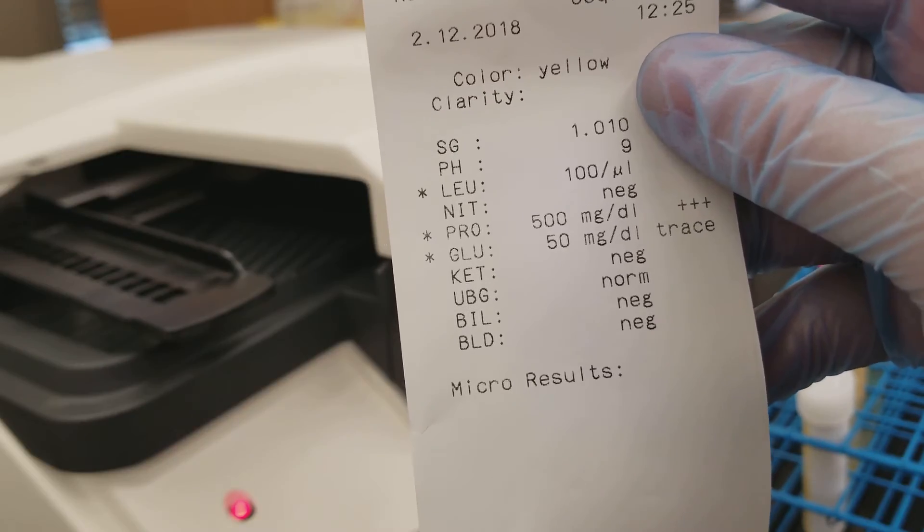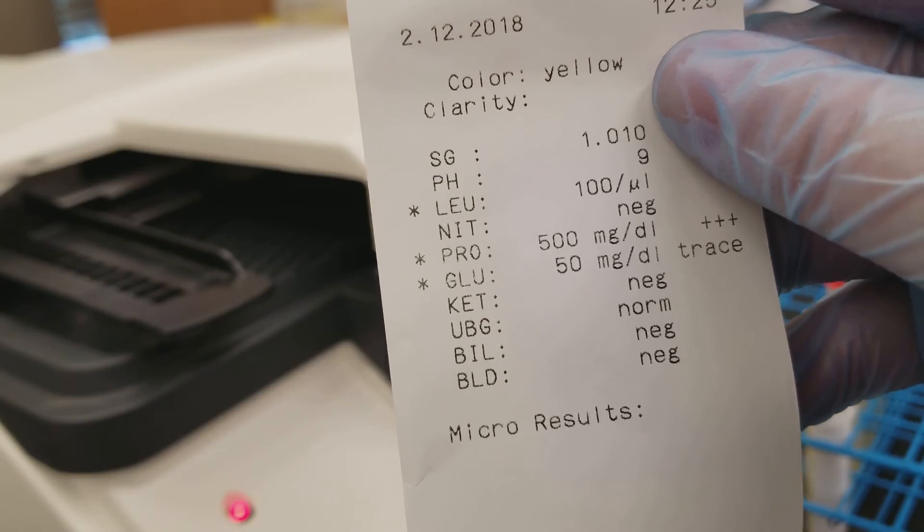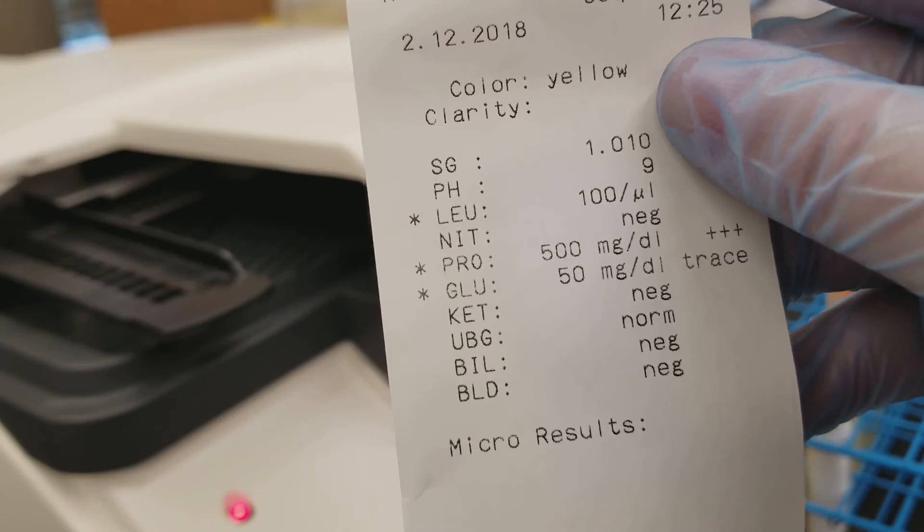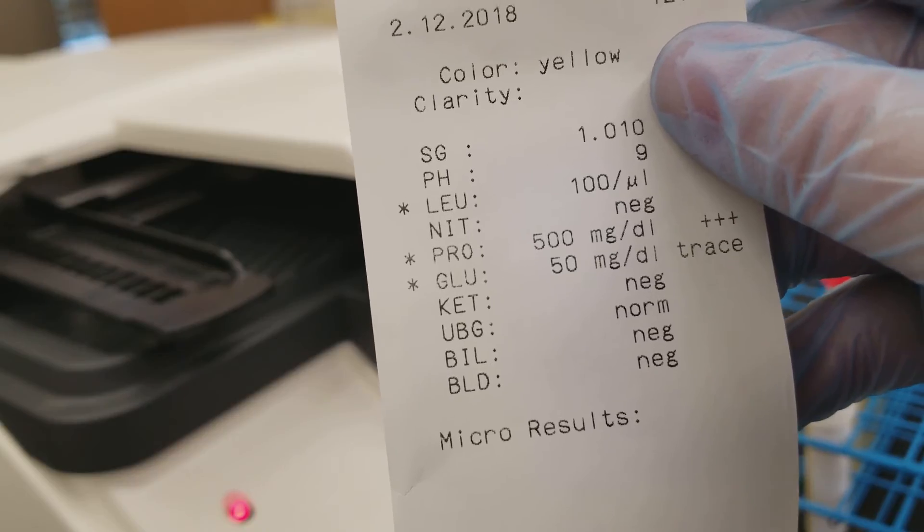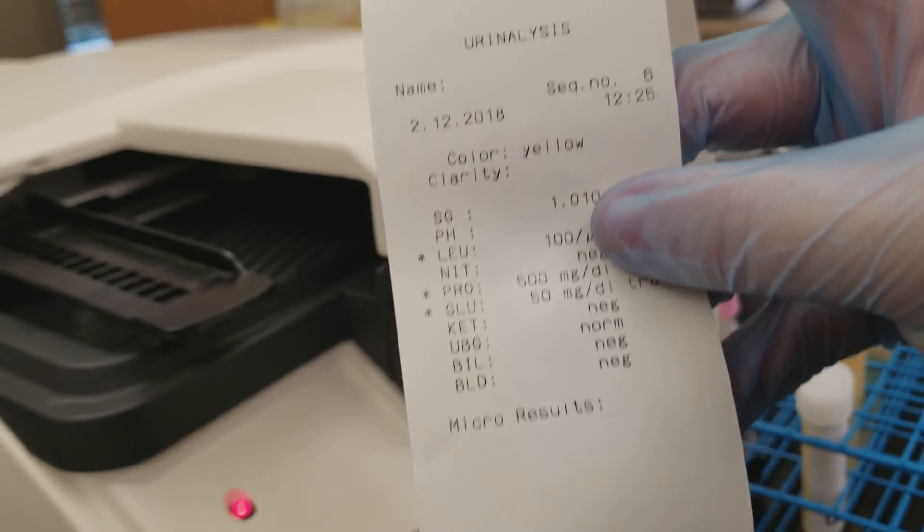If the person was in diabetic ketoacidosis they'd have a positive glucose and a positive ketone which they don't, so this just looks like a chronic issue. Okay so I will get these set up on the microscope and we'll take a look at all of them.